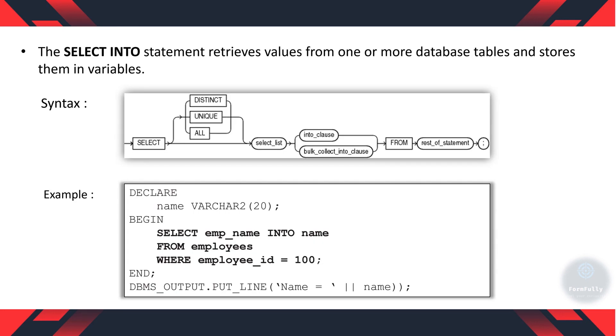The select into statement retrieves values from one or more database tables and stores them in a variable. In the syntax given you can see the select clause is used to extract values from database table. The distinct and unique keyword is used to return only one copy of each set of duplicate rows. The all keyword is used to extract all the selected rows. Select list: here you can mention the column list which you want from the database table. Into clause and bulk collect into clause are used to store the database extracted values into a variable.